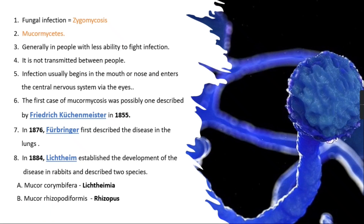We have heard about black fungus recently, but in the year 1855 a scientist called Friedrich already described the first case of mucormycosis. Later, in the year 1876, another scientist called Friedrich first described the disease caused in the lungs. In 1884, experiments were done on rabbits to prove this disease, and it was described that there are two species of spores that cause this disease.